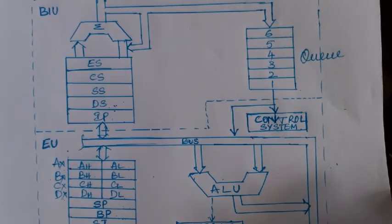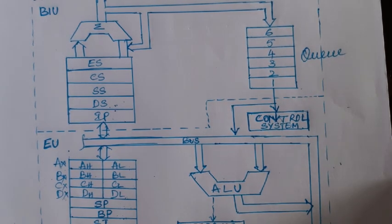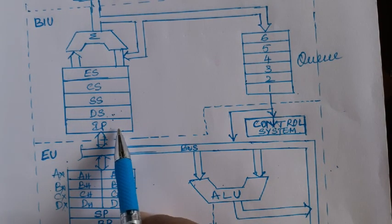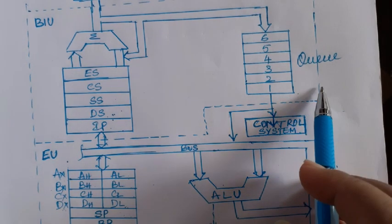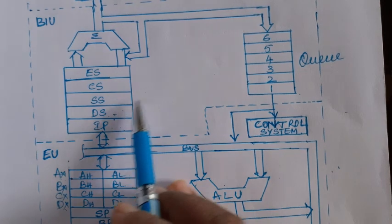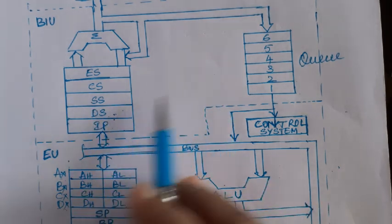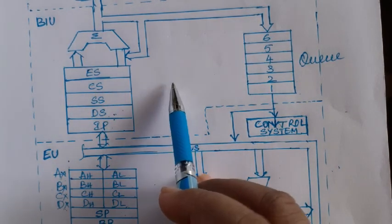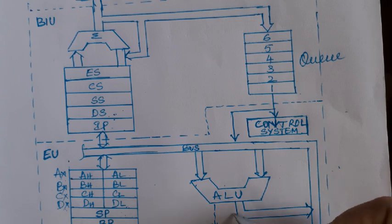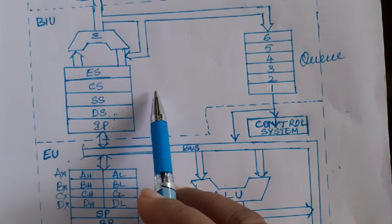Let's continue with the internal architecture of 8086, specifically the Bus Interface Unit. In the Bus Interface Unit we have six 16-bit registers and one six-byte instruction queue. The Bus Interface Unit handles all data transfers — it fetches the instructions as well as the data required by the program. When the BIU fetches an instruction, it gives that instruction to the Execution Unit for decoding and executing.